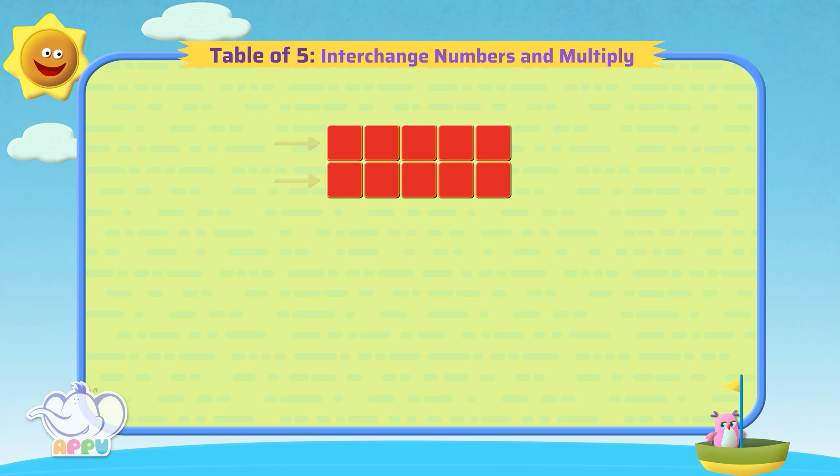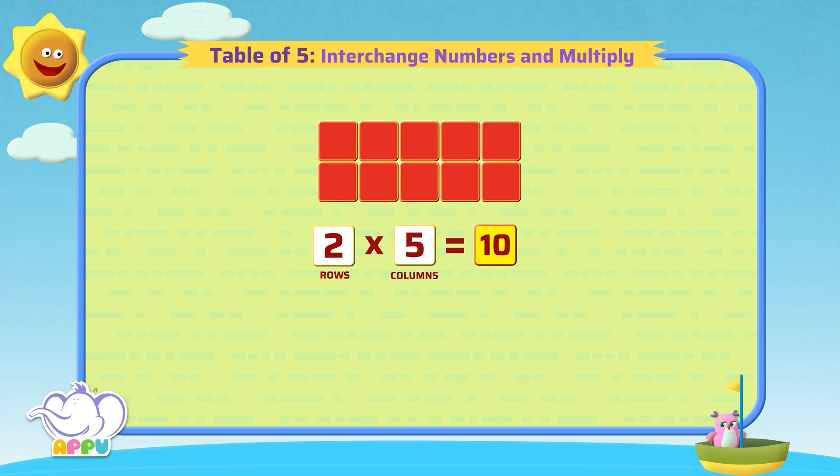We see above that there are 2 rows of squares and 5 columns of squares. So 2 rows times 5 columns equals 10 squares.